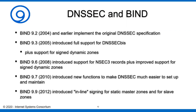In 2010, BIND 9.7 introduced new functions to make DNSSEC easier to set up and maintain. BIND 9.7 was the 'DNSSEC for humans' release. It wasn't just that additional options were added — a lot of the options had defaults set to something that actually worked very well for deployment. So BIND 9.7 was the first time it was really easy to start deploying DNSSEC on BIND.